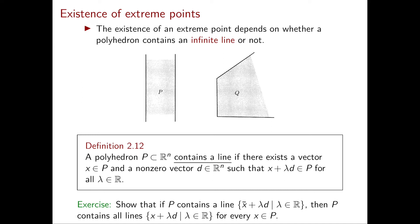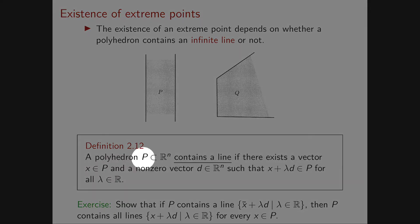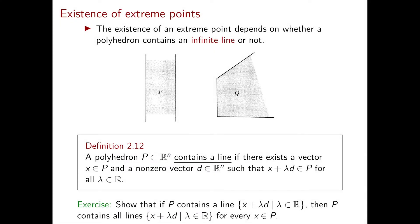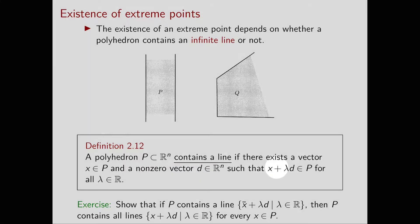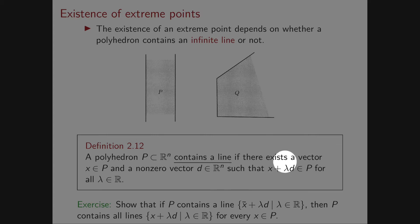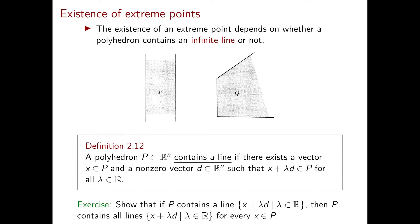Now that we have a better grasp of what it means for a polyhedron to contain a line, let's give the formal definition. A polyhedron P in Rn contains a line if there exists a vector x in P and a non-zero direction vector d such that x plus lambda d is in P for all lambda in R. You can think of x plus lambda d as a point on the line; since we can pick any lambda in R, we can travel from x in direction d arbitrarily far in both positive and negative directions, and that's how you obtain your line.